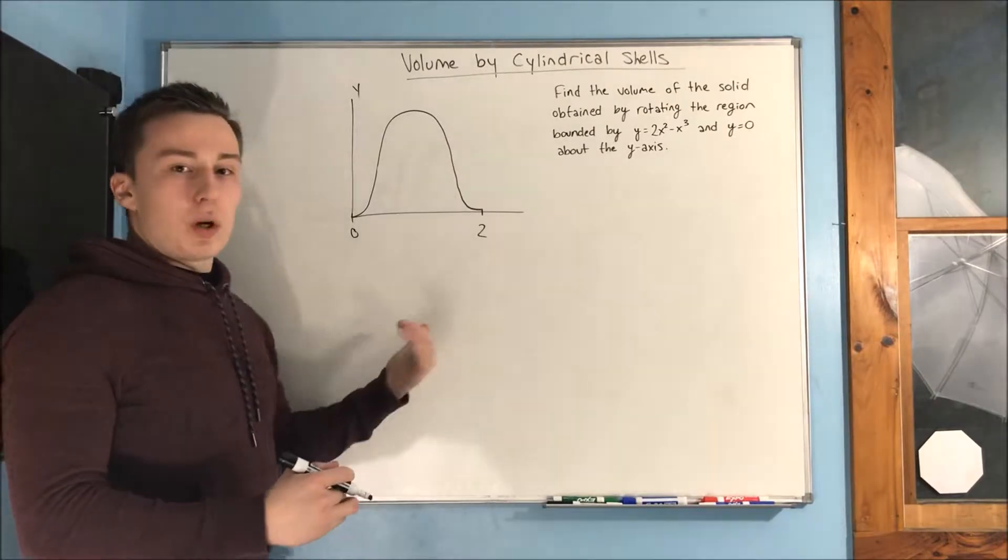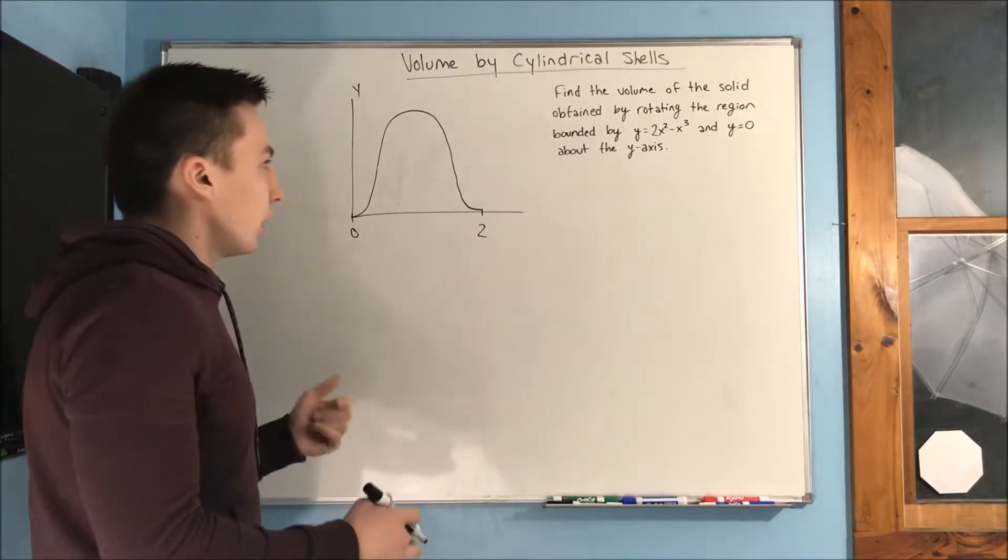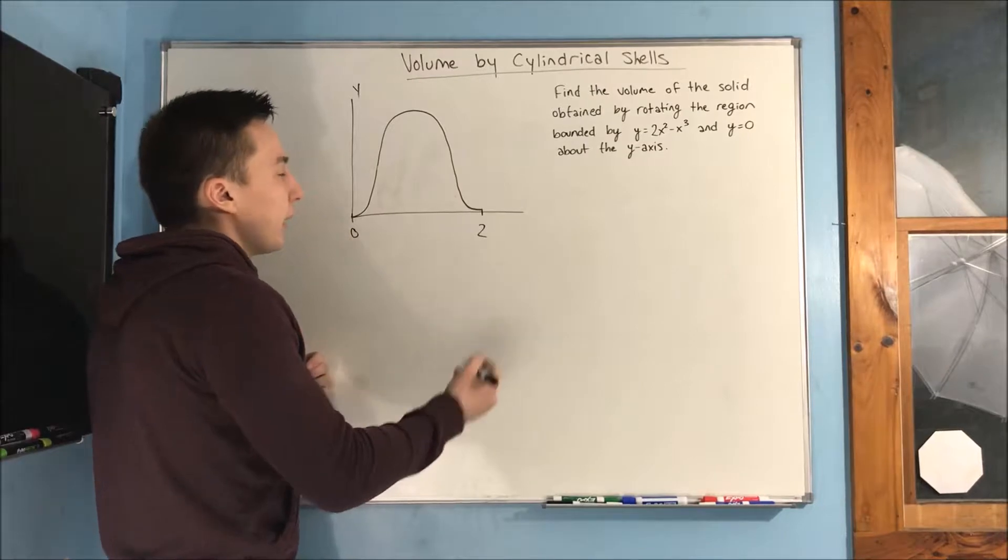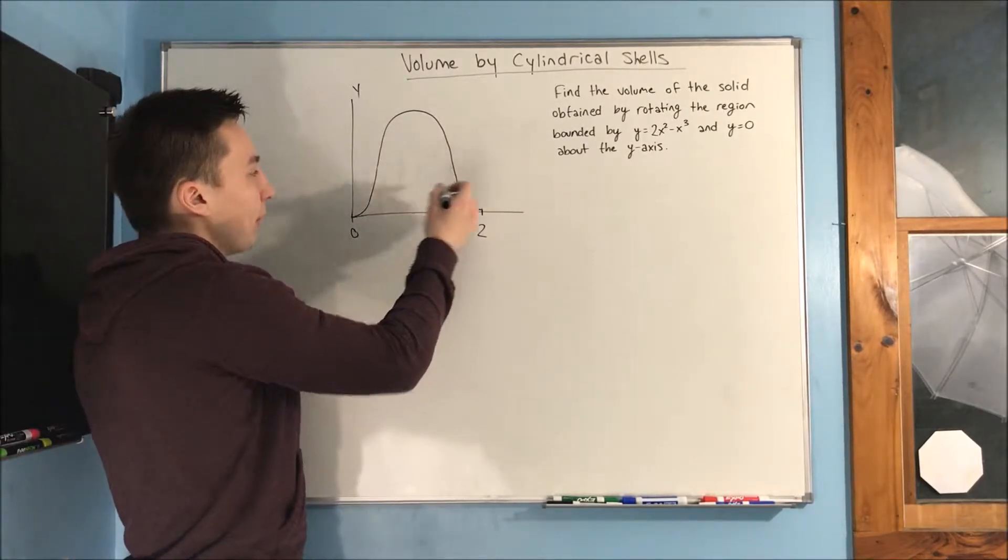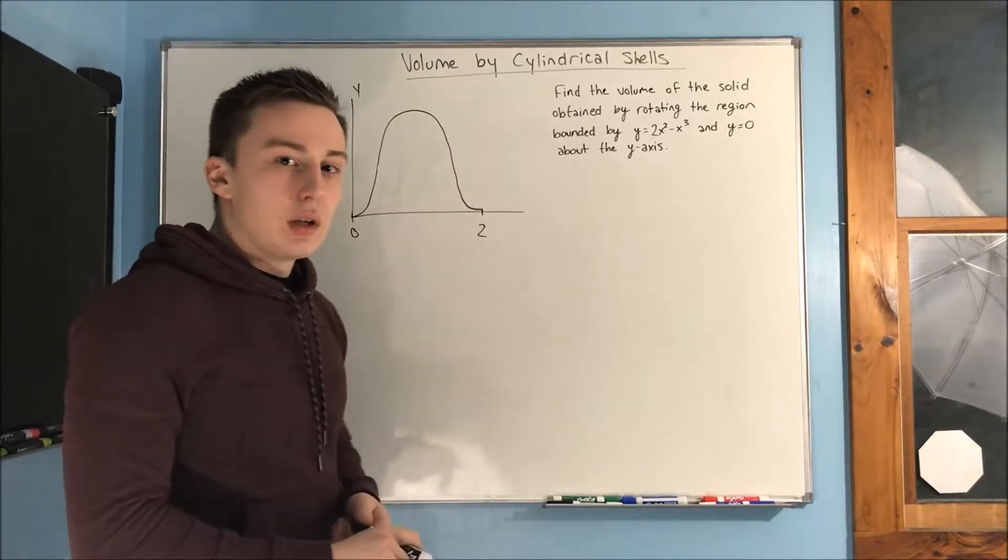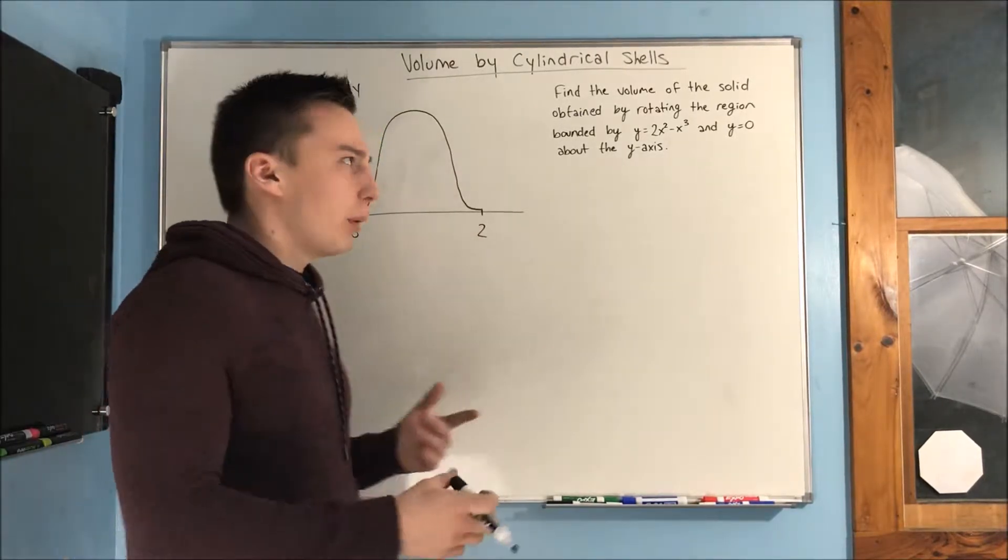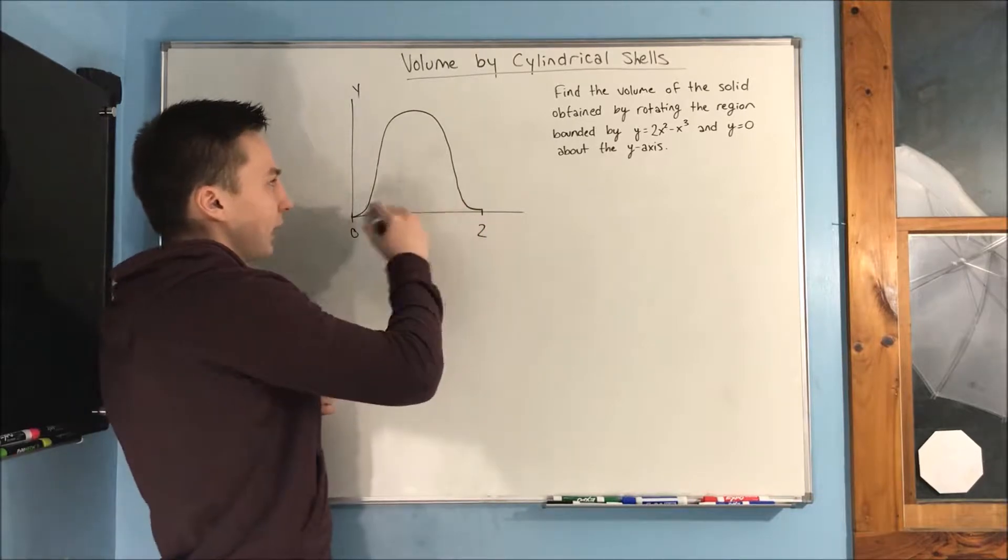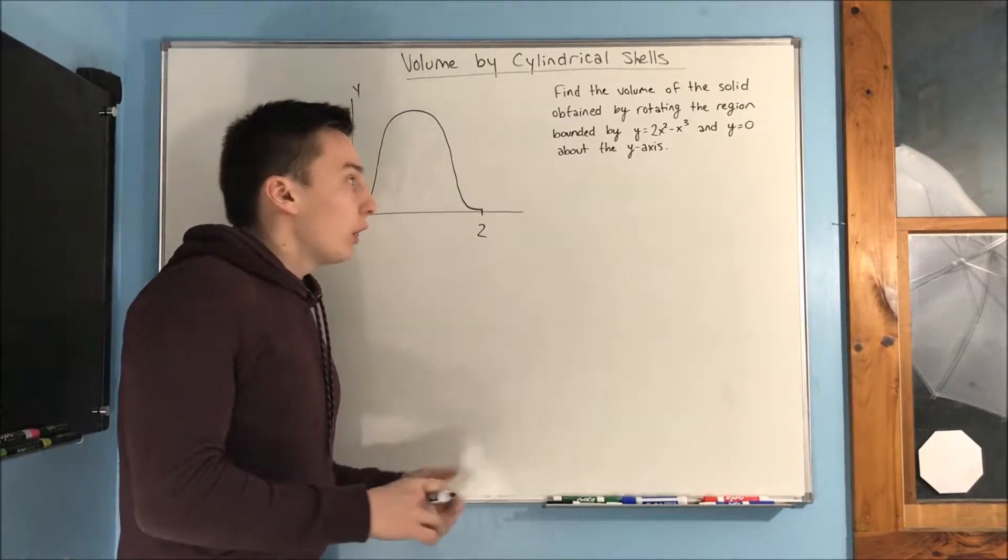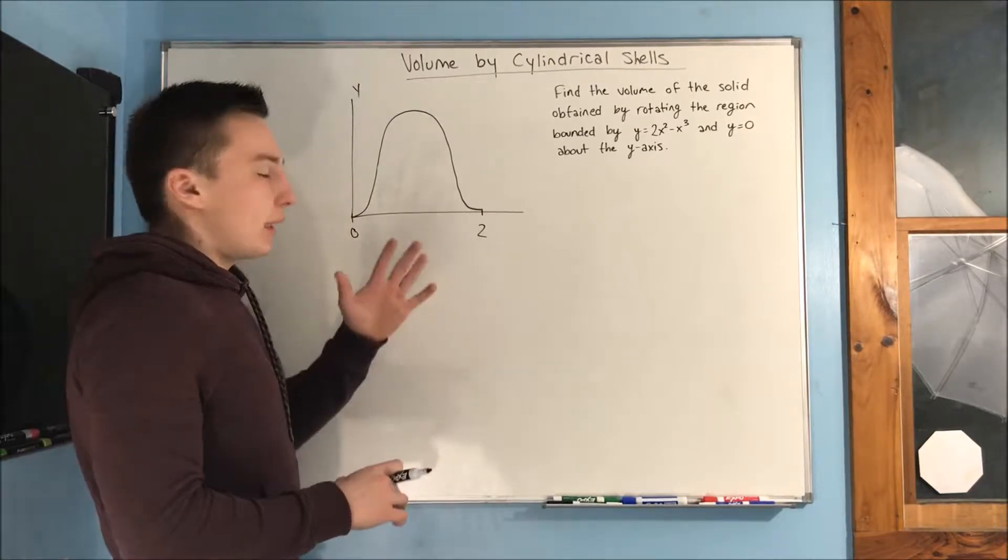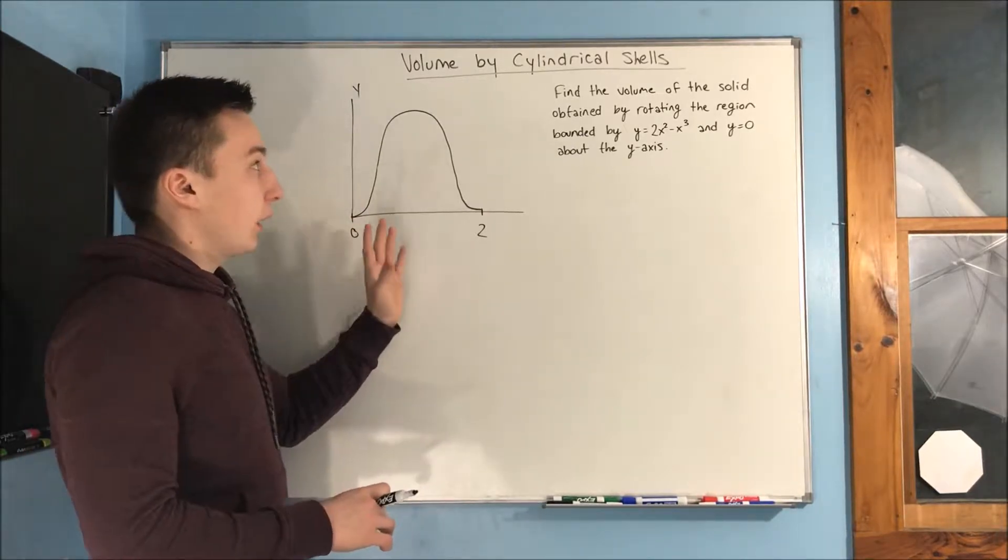So we would need to use washer method here, right? But the problem here is that we have our top function here and our bottom function here, but they're the same exact function. So we run into a problem. We can't, it doesn't really make sense of how to actually end up solving this. So what we can do and make this a ton easier is use cylindrical shells.